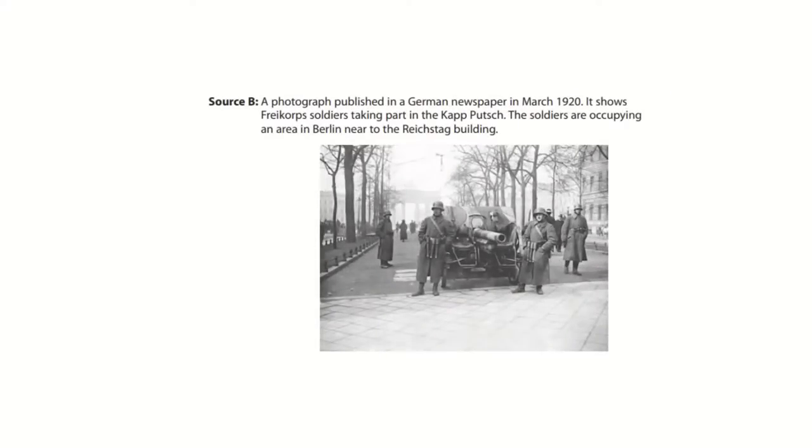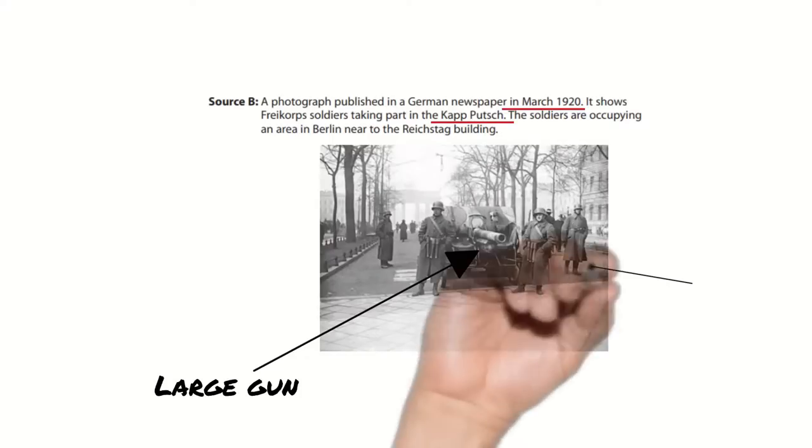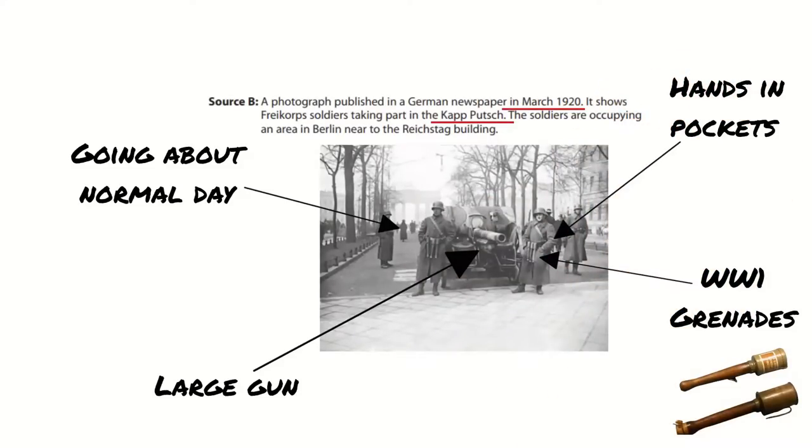Source B is a photograph and there's quite a lot of information in the caption which is going to help us. It tells us the photo is of the Kapp Putsch in 1922 and it shows soldiers occupying Berlin near to the Reichstag. So this is really useful, it tells us exactly what the picture shows and tells us our answer is going to focus on the Kapp Putsch. I'm going to highlight a couple of those phrases to remind me while I'm writing my essay. I'm also going to annotate the picture because there are a couple of things I think are important. Firstly, the soldiers are really well armed. There's a large gun in the middle and the men are armed with WW1 grenades. I'm going to make some inferences from that in my answer. Secondly, I have spotted that the people in the background seem to be going about their daily business and they're not paying the men any attention. And finally, the men are not fighting, they're just standing around with their hands in their pockets. So that's all I'm going to highlight because I don't have all that long to write my answer so I only want to focus on two or three key things.